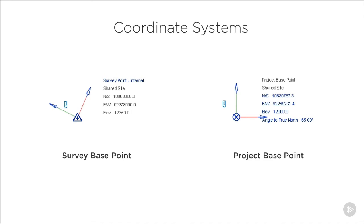The survey point is defined using a north-south and east-west position on plan as well as an elevation, and these will be displayed in the units of your project. This project is in millimetres so the values given are also in millimetres. The other base point we have is the project base point, which defines the origin of our project coordinate system and is typically placed somewhere relevant to the project so that all project dimensions can be taken from this common point. You might have noticed that our project base point also has an angle to true north, which we can use to define our project north relative to true north and make sure that our building sits squarely on the page.